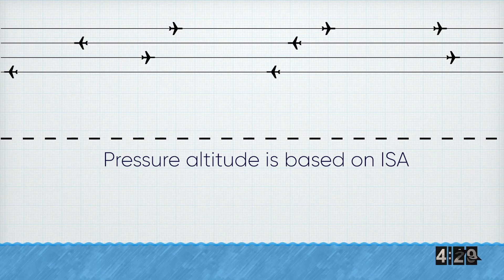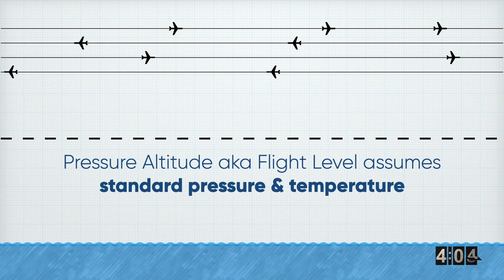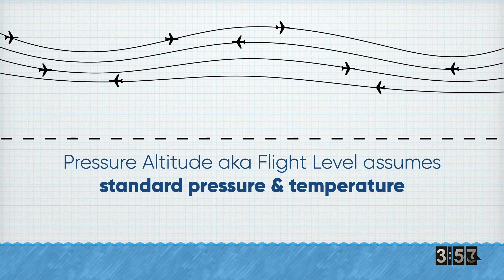ISA makes a couple of assumptions: firstly, that the pressure at sea level is 1013 millibars, and that the temperature at sea level is 15 degrees Celsius. So we can say that pressure altitude is based on a standard pressure and temperature — but we hardly ever fly through a standard atmosphere. So our flight levels might actually look more like this as we go between different pressure and temperature areas.